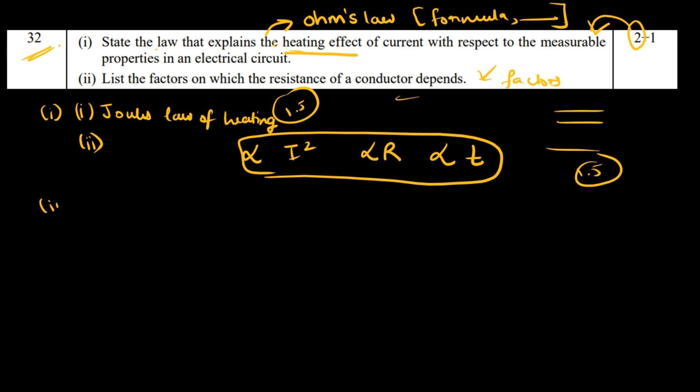The second part: List the factors on which the resistance of a conductor depends. We know the formula R = ρL/A, so it's related to the length, area of cross section - which is related to temperature as temperature increases, some metals expand and contract - and another thing is the nature of the material.